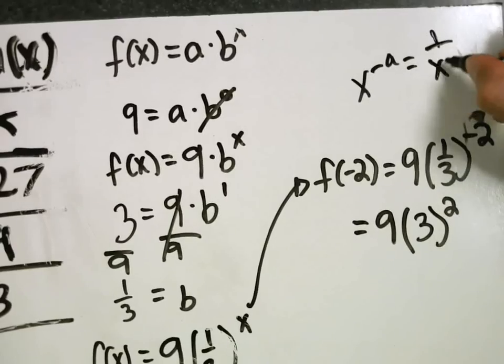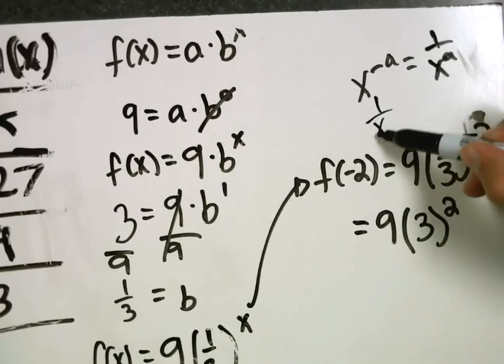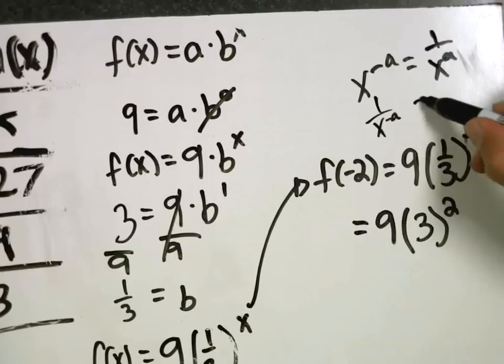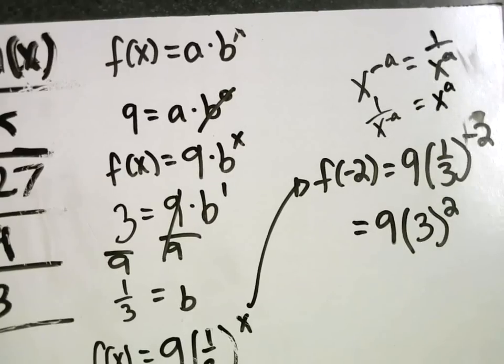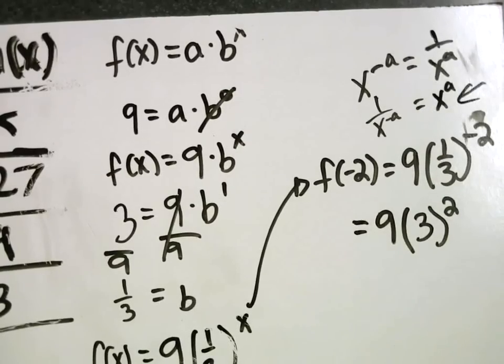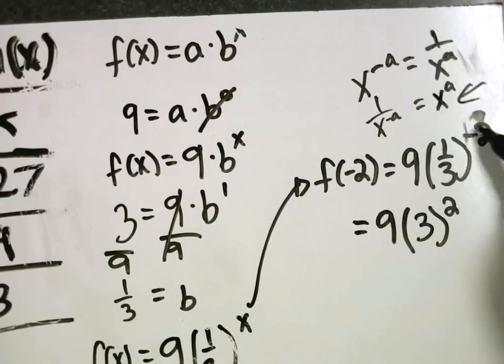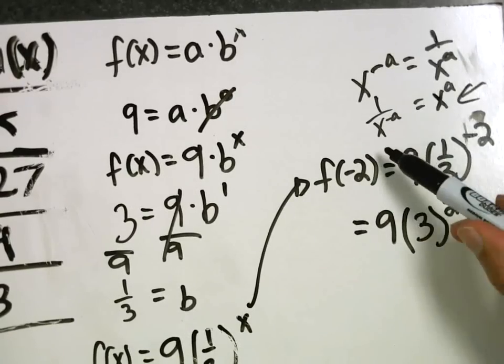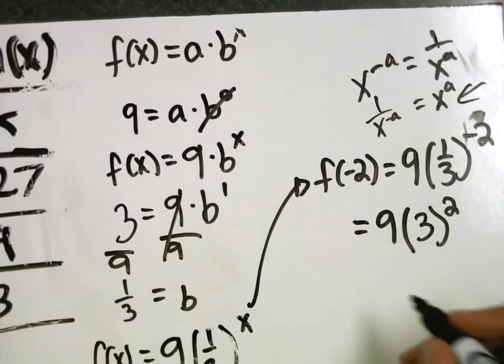So, if it's 1 over x to the negative a, that's the same thing as saying x to the a. So, both of those work. In this case, I'm using that version of it. 1 over a fraction to a negative exponent is the same thing as that number to the positive exponent. All right. So, what's 3 squared? 9. That's right. So, 9 times 9, 81.